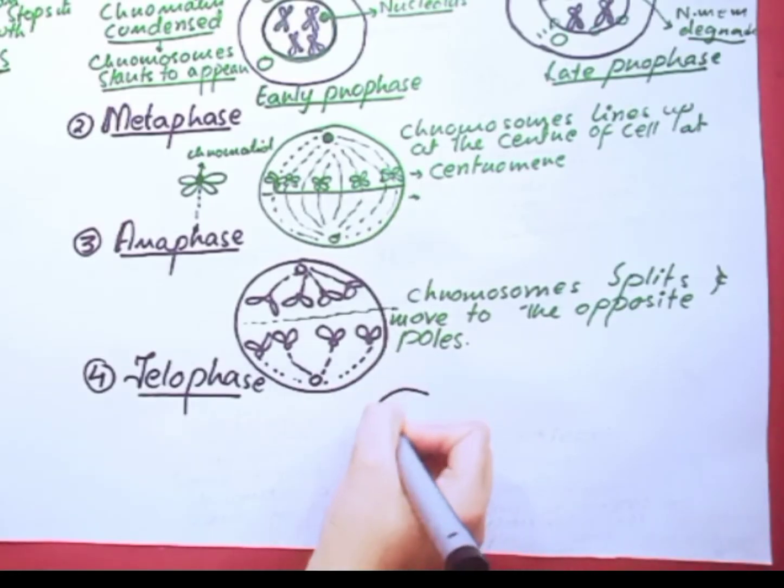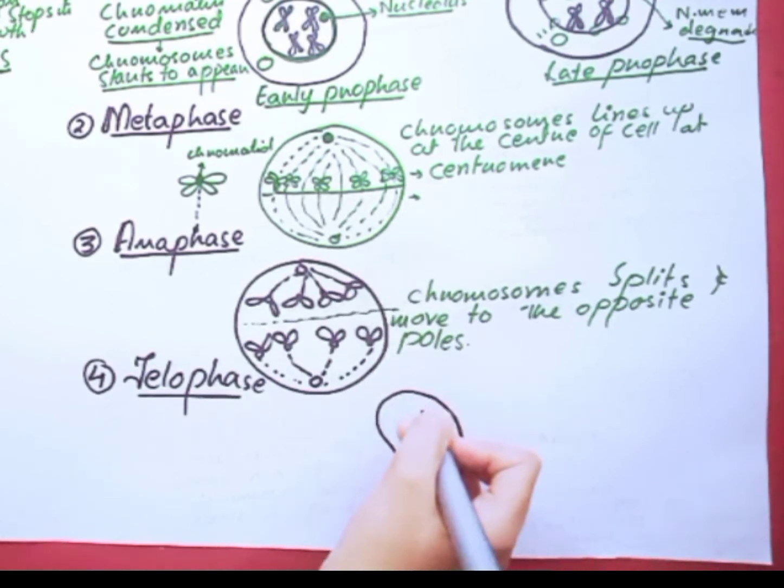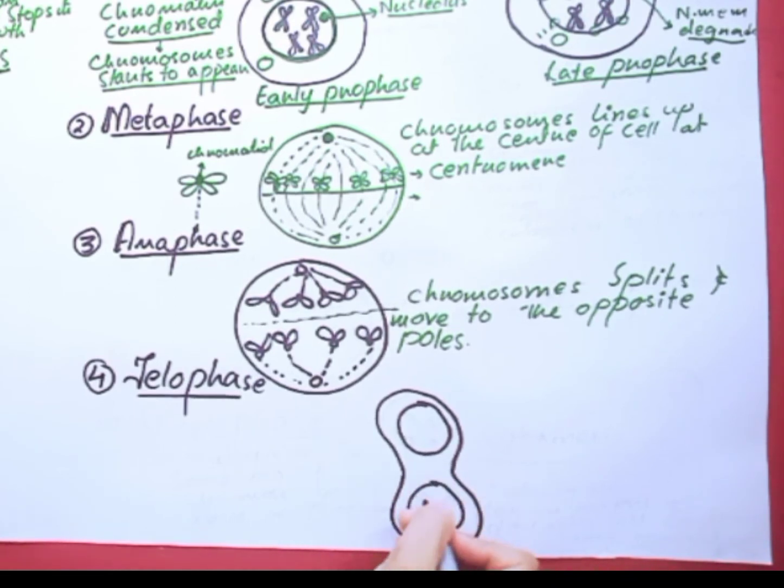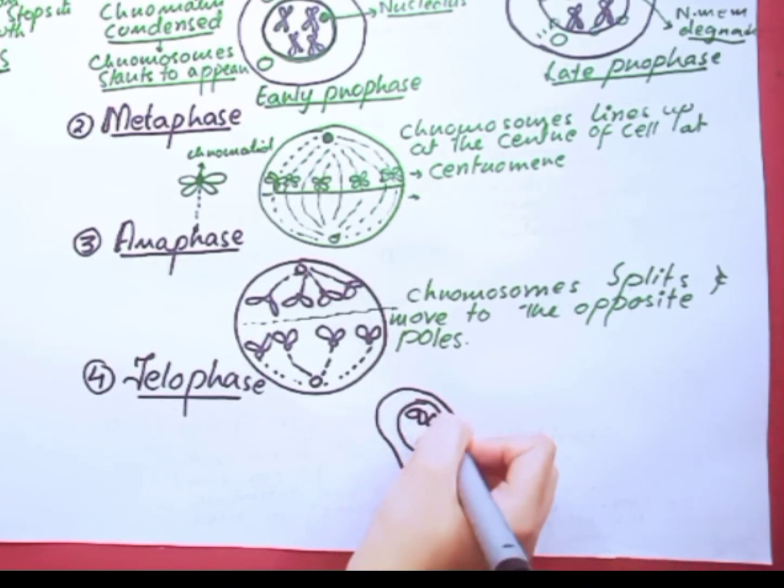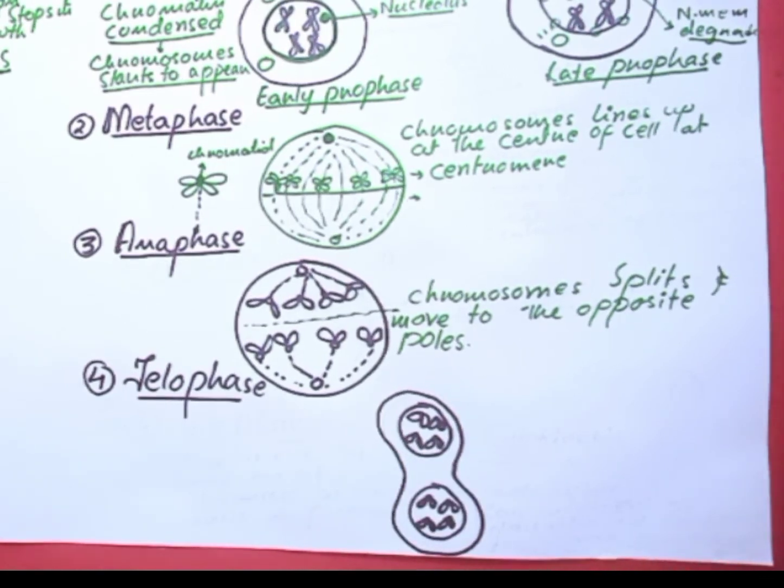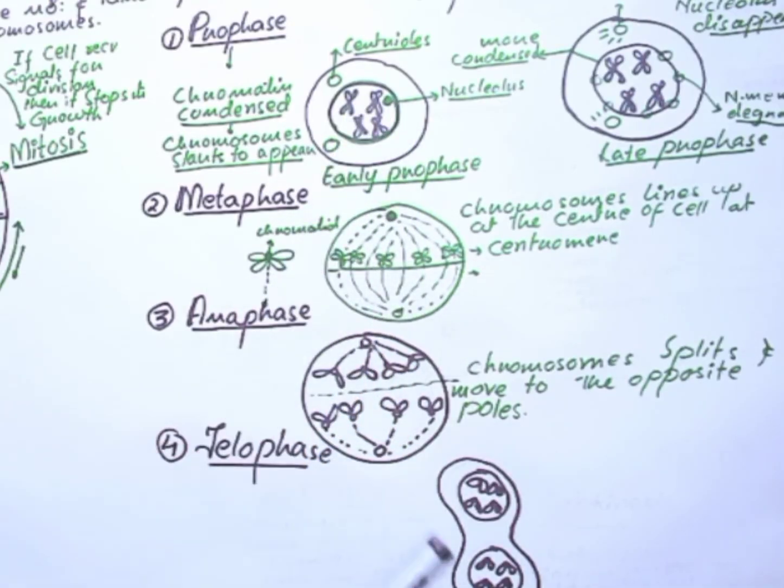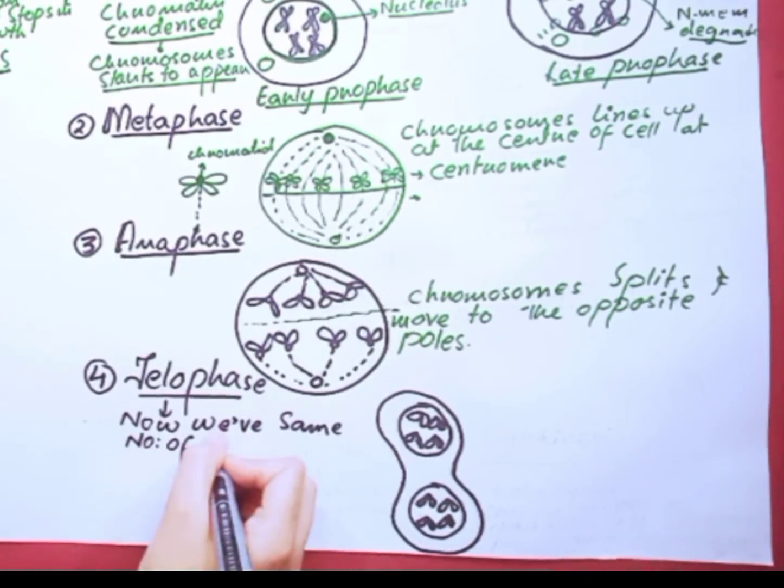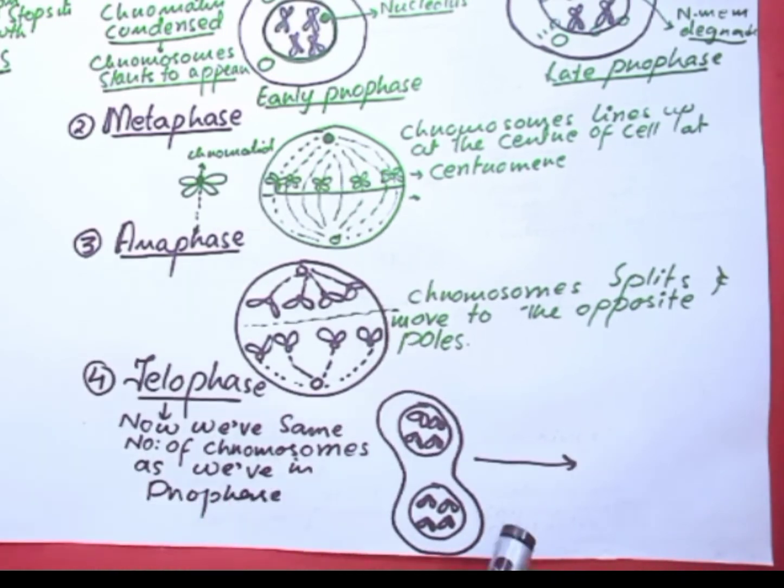Next, the last stage of mitosis is telophase. In telophase, you can see the cell formed two nuclei and now we have the same number of chromosomes as we have in the prophase. That's why we say in mitosis the daughter cell contains the same number of chromosomes as their parent cell.